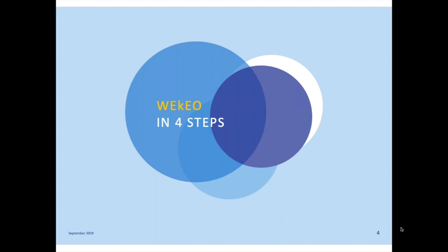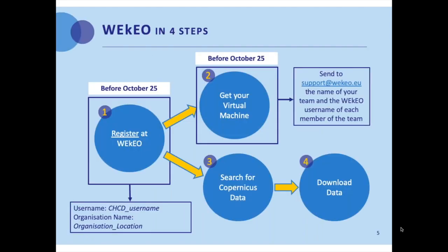The four basic steps are the following. First, to register at Wikeo. The second one, to get your virtual machine. The third step, to search for Copernicus data. And the fourth step, to download this data. Let's start.